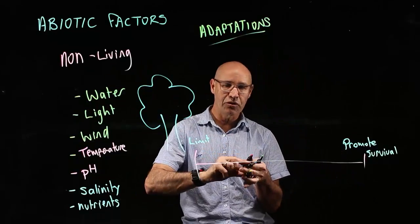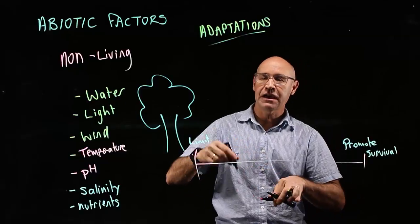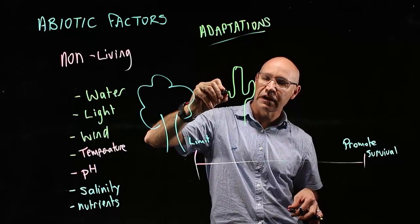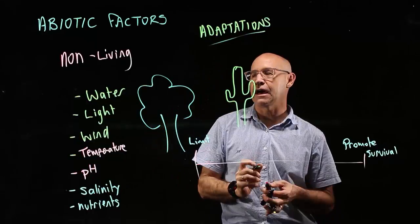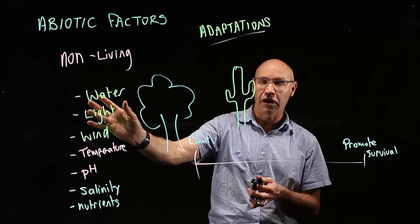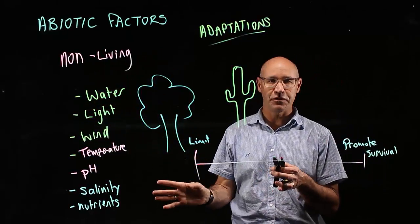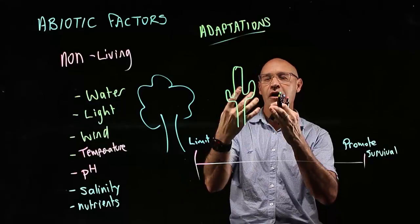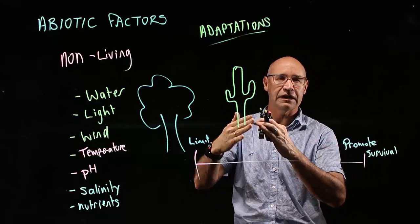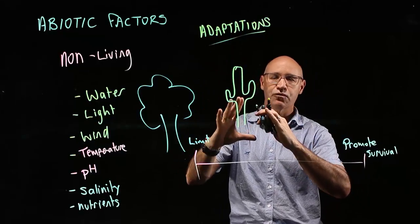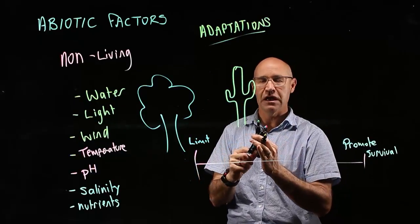For example, let's think about a cactus that lives in the desert. A cactus is in an area with high light but very low water and very high temperatures. The trouble with high temperatures and low water is that it's very hard for the plant to retain water and it loses water very quickly.